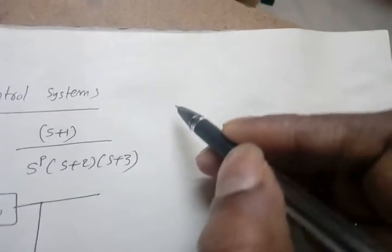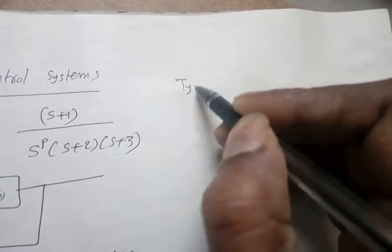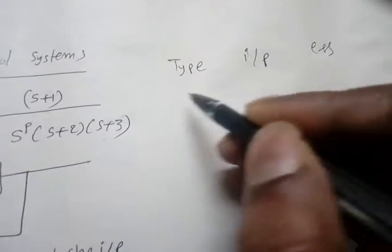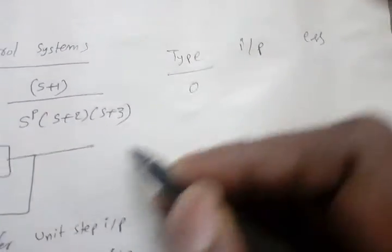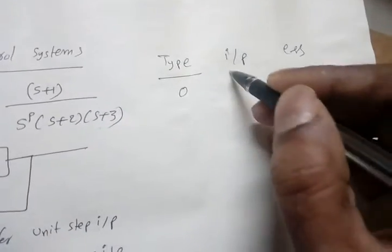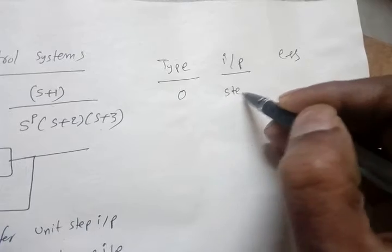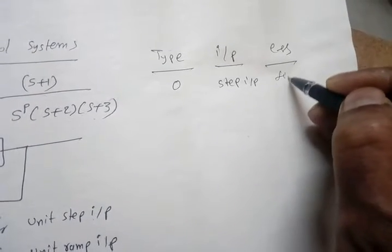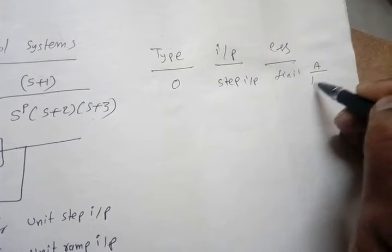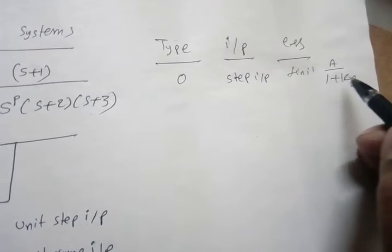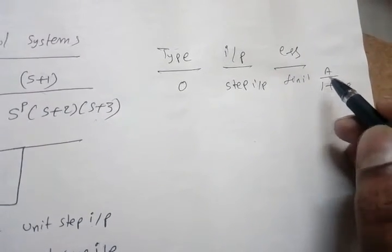Now to solve this, we need some basics about the steady state error. So I will give, if type and input, what is the steady state error? If type is equal to 0, that means at origin there are no poles. So input is step input, then steady state error is finite. We can say A by 1 plus Kp. Kp is a position error coefficient. A is the input amplitude.